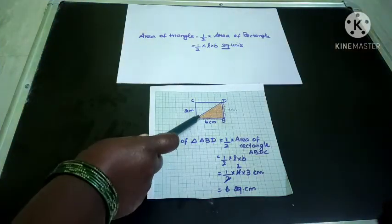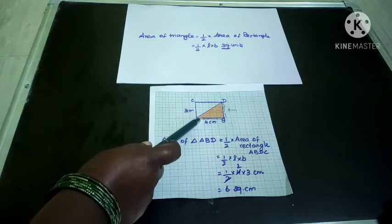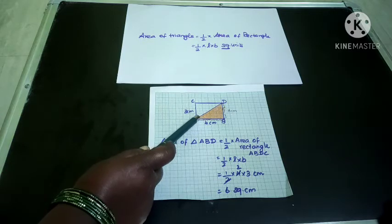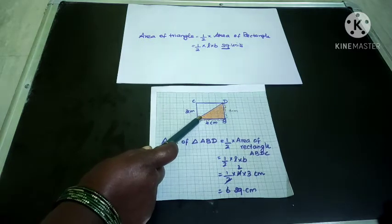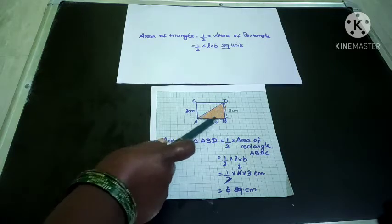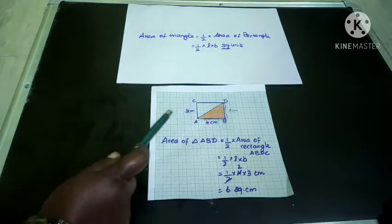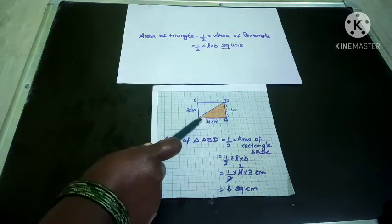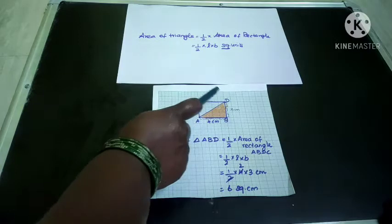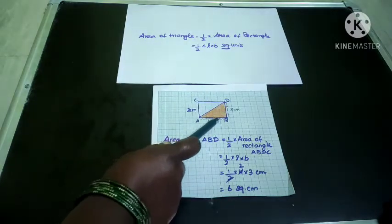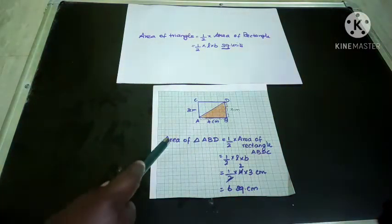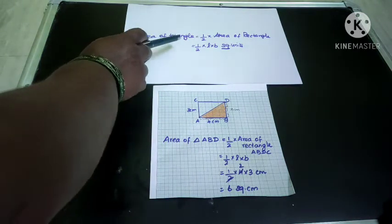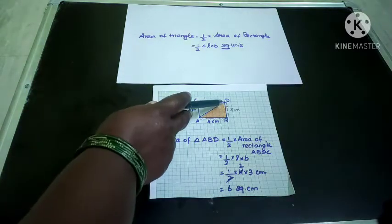Here I have drawn a rectangle. The length is 4 centimeters and breadth is 3 centimeters — you can see each square part is 1 centimeter: 1, 2, 3, 4 centimeters, and here it is 3 centimeters. I want to find out the area of triangle ABD. ABDC is a rectangle, so from the rectangle I want to find out the area of this shaded triangle.